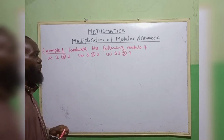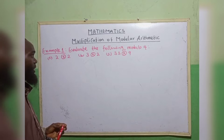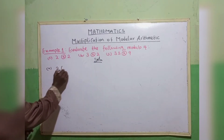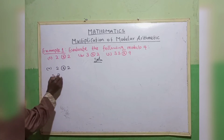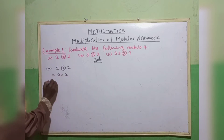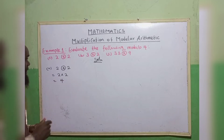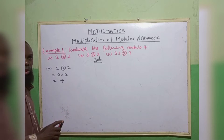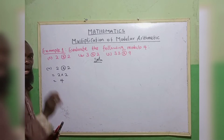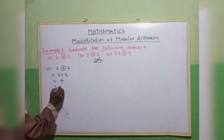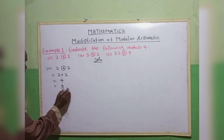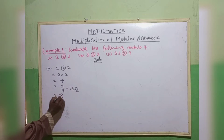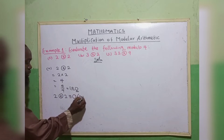Example 1: evaluate the following in modulo 4. The first one, we have 2 multiplied by 2. As you know, 2 multiplied by 2 gives 4. One of the rules is: whenever we have a number that is equal to or greater than the modulo, it cannot be our answer. So we divide: 4 divided by 4 gives 1, remainder 0. So 2 multiplied by 2 is equivalent to 0 in modulo 4.